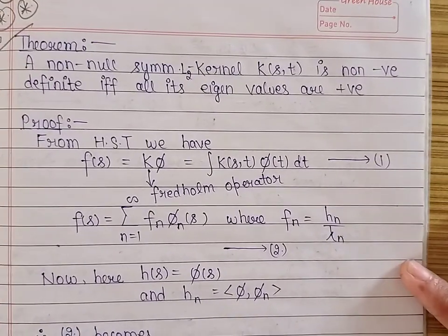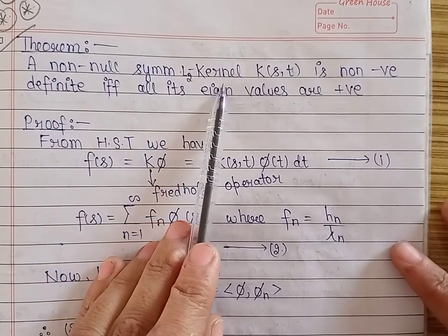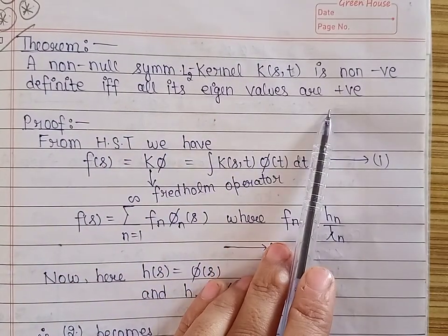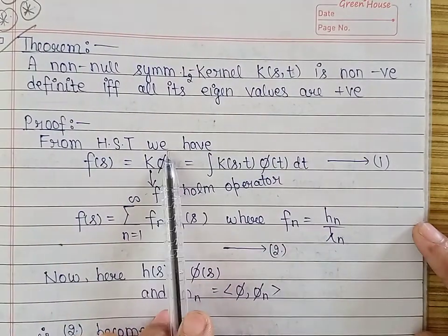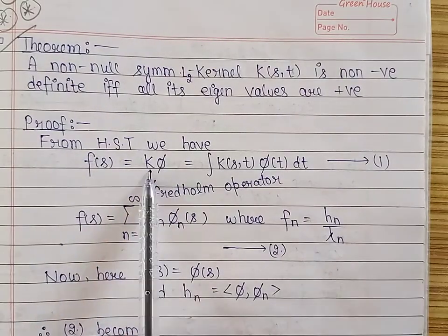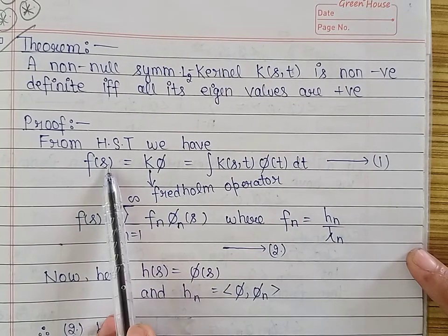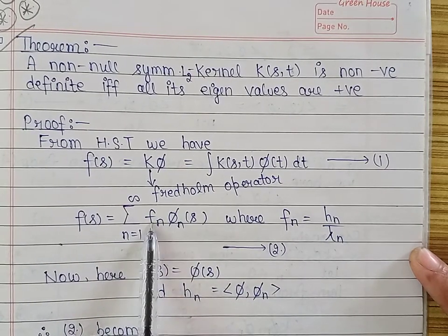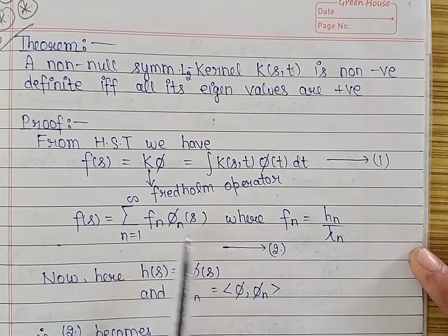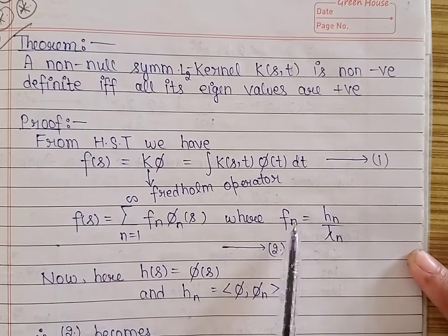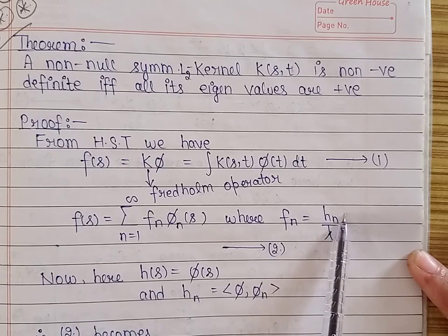The next theorem states: a non-null symmetric square integrable kernel is non-negative definite if and only if all its eigenvalues are positive. To prove this, we use the Hilbert-Schmidt theorem, which states that if a function f is represented in the form of K*phi — that is, the integral of K(s,t)*phi(t) dt — then f can be expanded as an absolutely and uniformly convergent Fourier series, where the Fourier coefficients f_n equal h_n divided by lambda_n, and h_n are the Fourier coefficients of h.